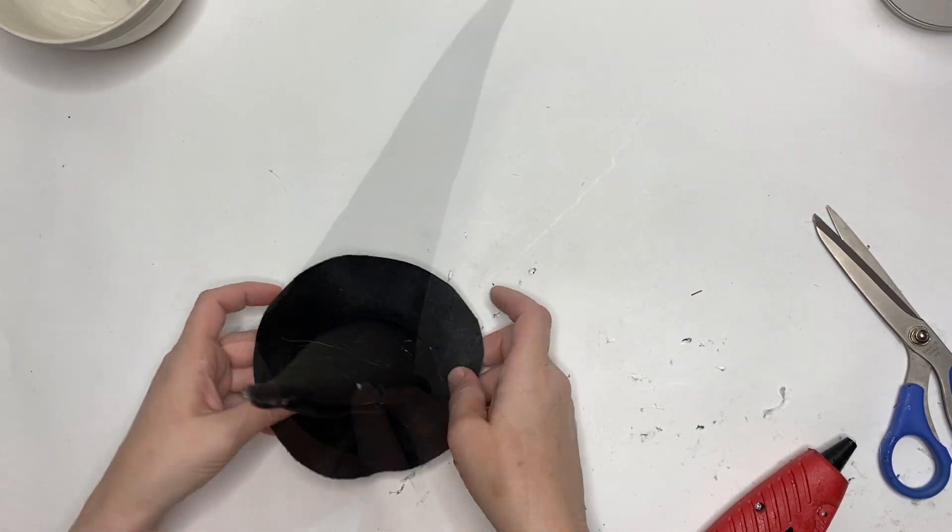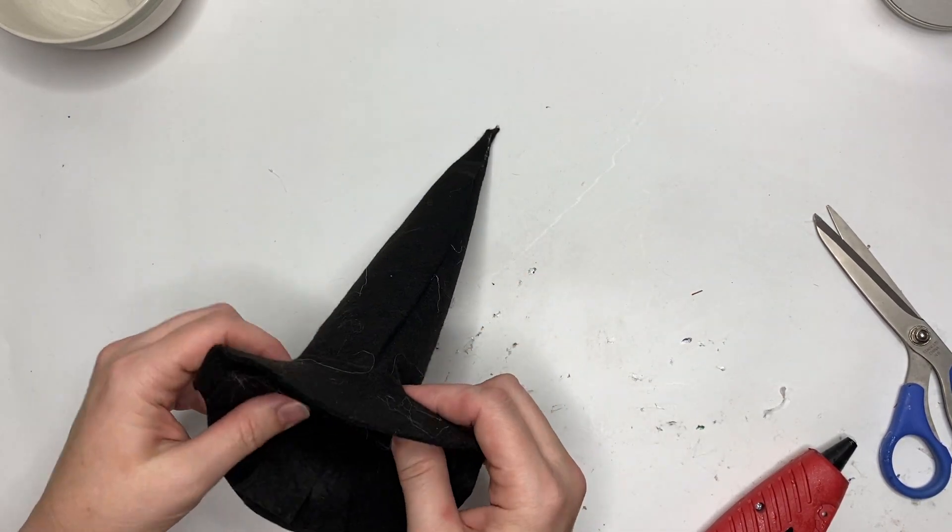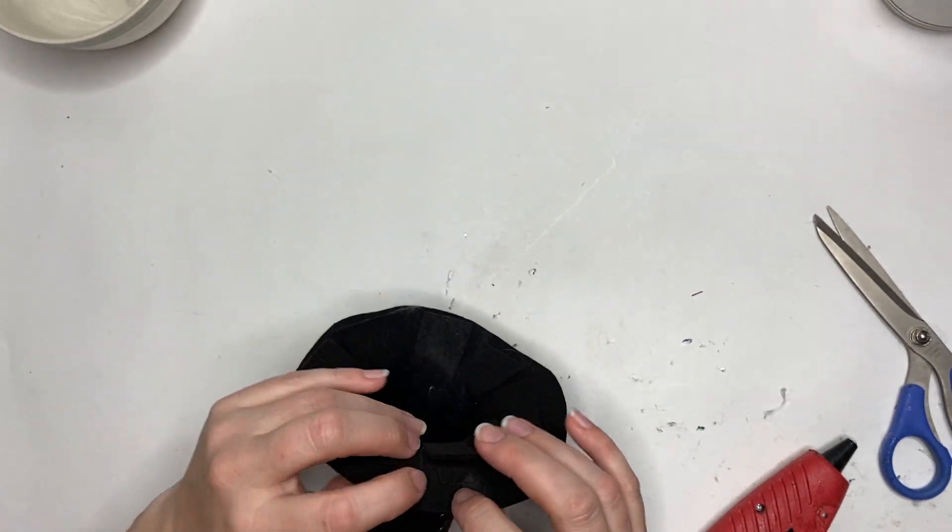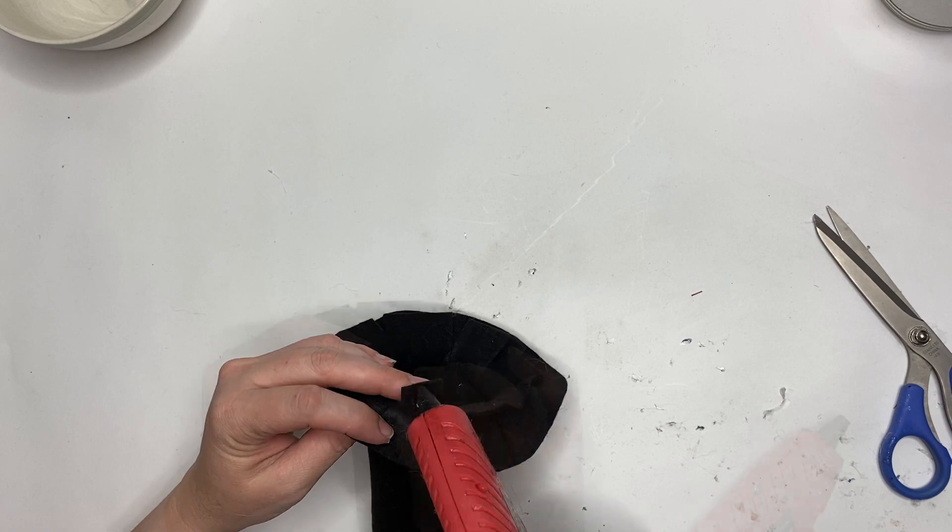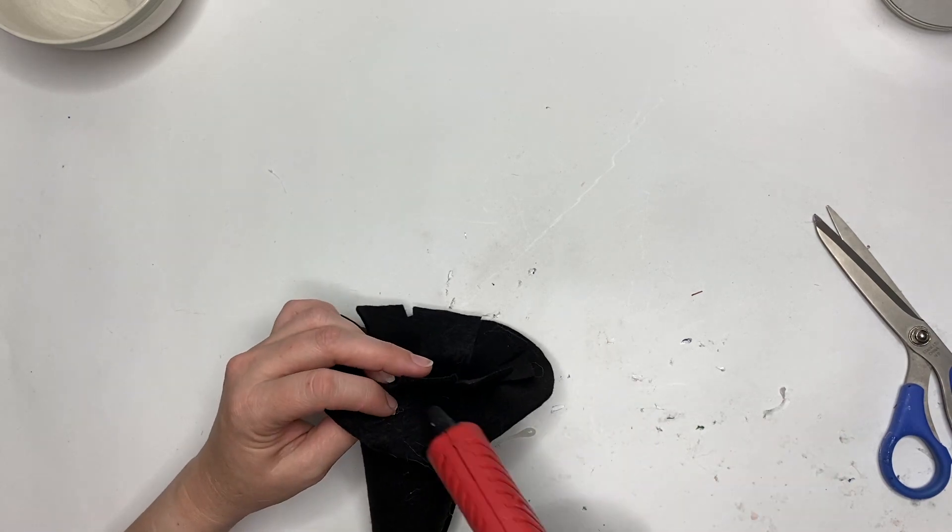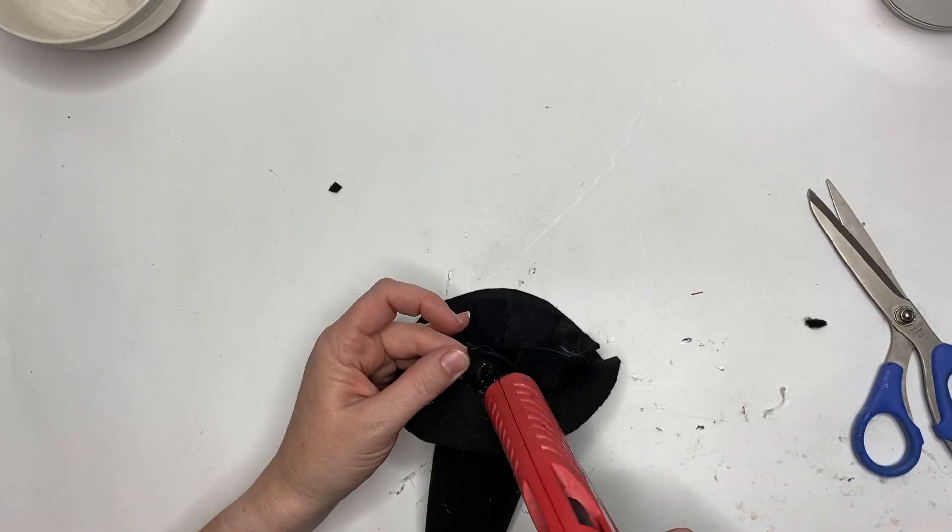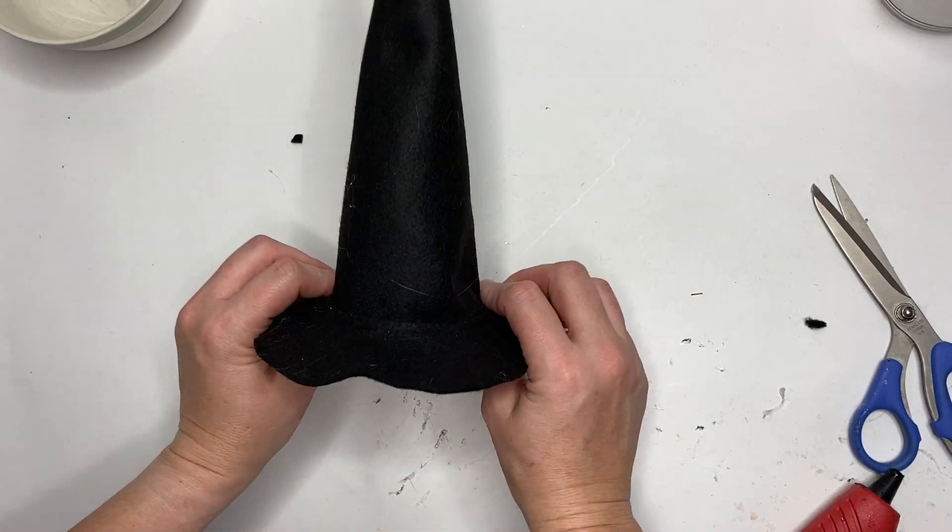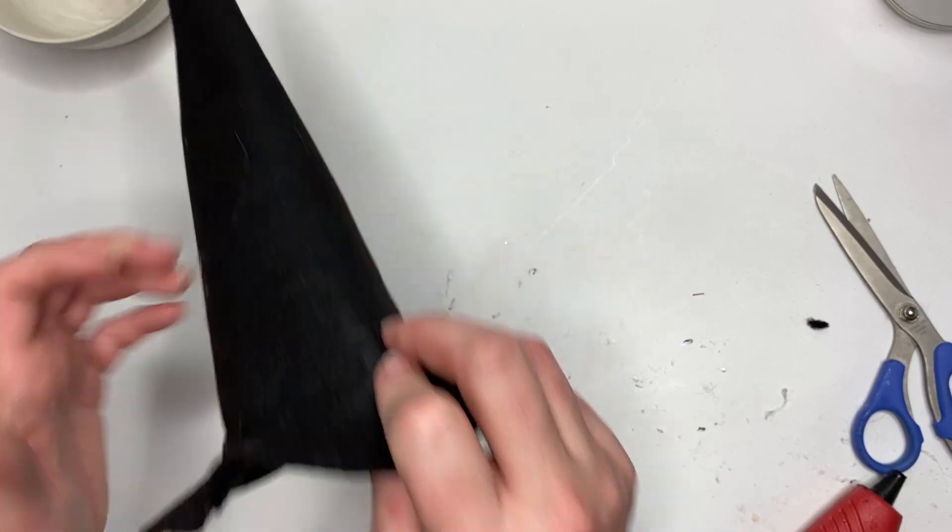I'm gonna flip them up—it's kind of hard to see black on black—but you flip them up and then you just put a little hot glue right under the flaps. You do that all the way around and then you cover it with the other circle you made. See, easy peasy lemon squeezy. Now you can't see any of the flaps and your witch's hat is done.